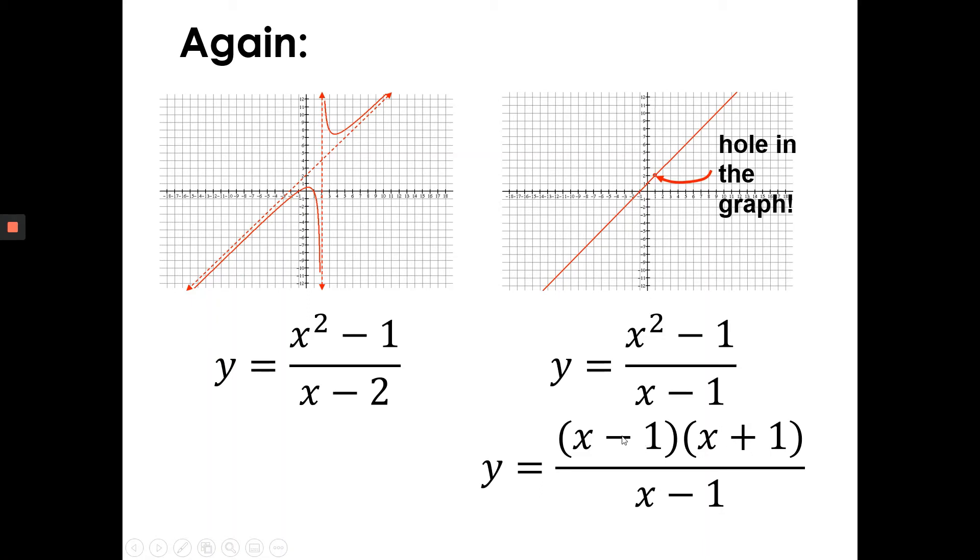So x squared minus 1 is x minus 1 times x plus 1. Hey, what do you know? There is a common factor between the numerator and denominator, a common factor of x minus 1. So we can simplify that, actually. And what you're left with is x plus 1.